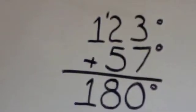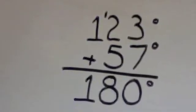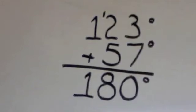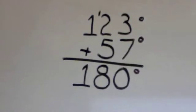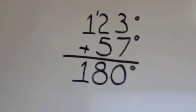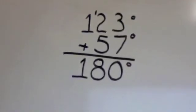Another way to look at this is by adding the 57 degrees to the 123 degrees. By doing this, we get a total of 180 degrees. This is just another way to show that these two angles are supplementary to one another.